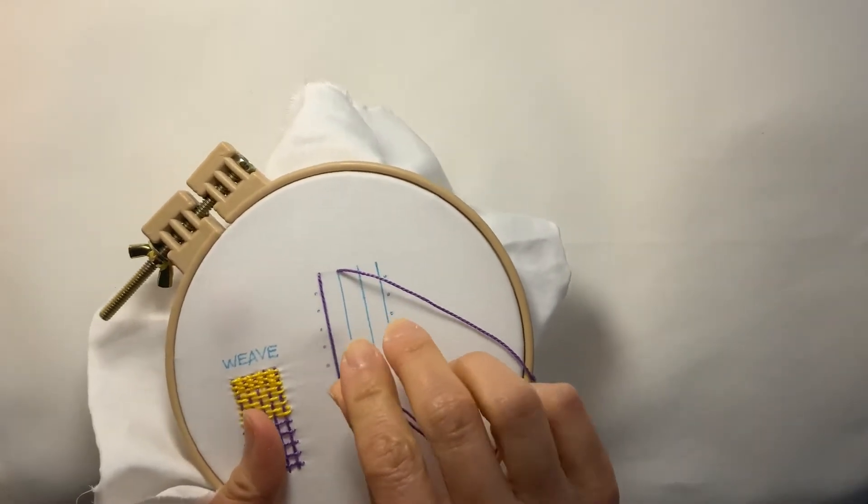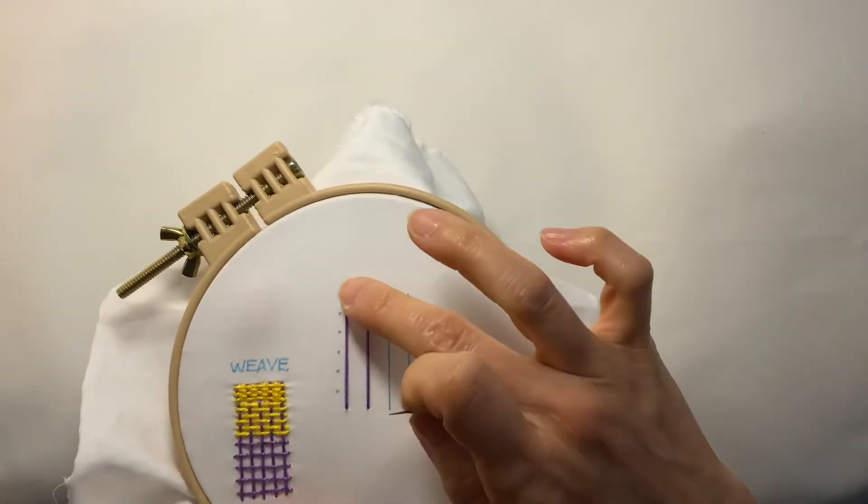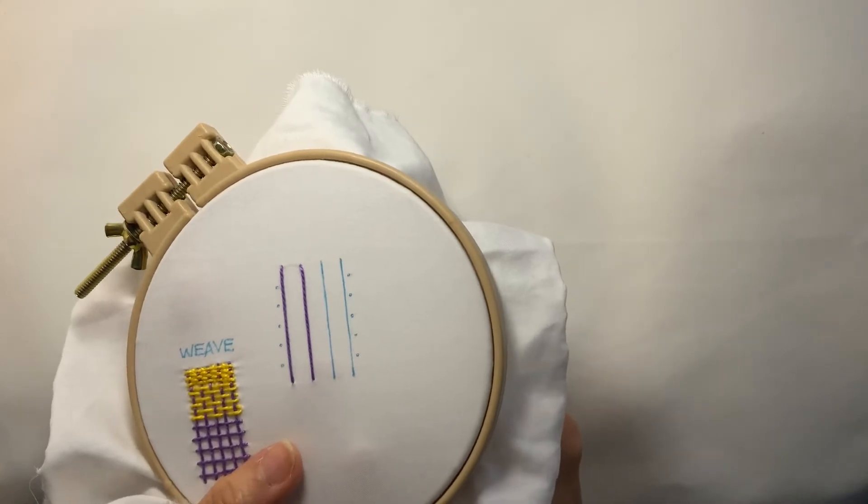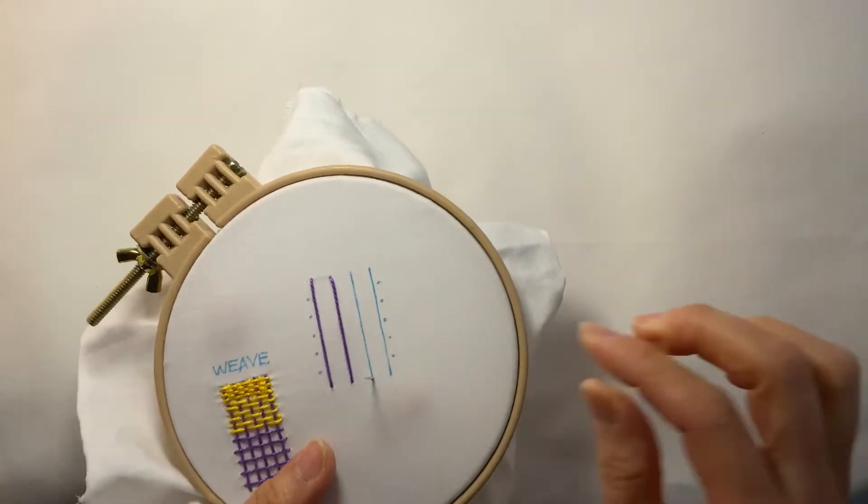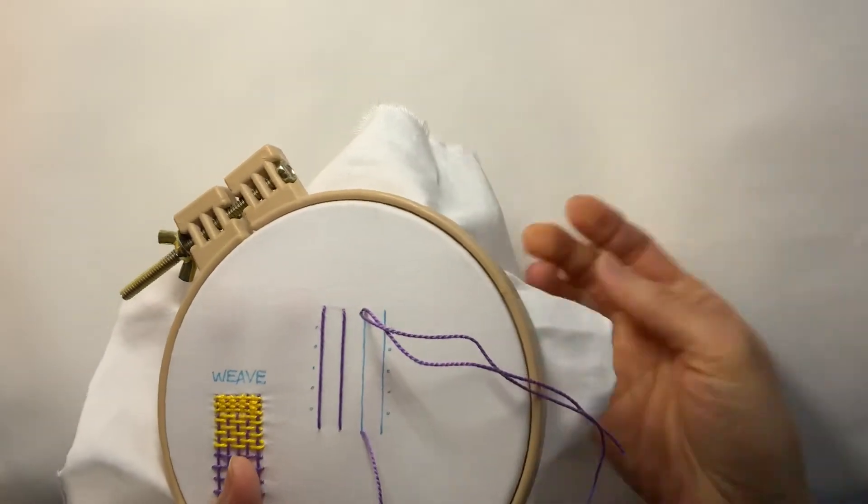You can place them however close you'd like. You can also make these vertical lines in different colors if you'd like. It really creates a lot of fun effects. So have fun experimenting with this stitch.